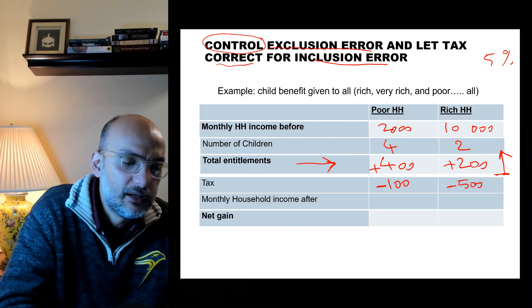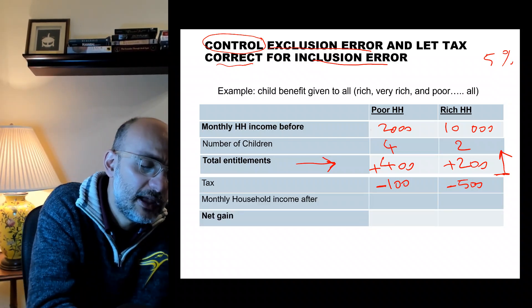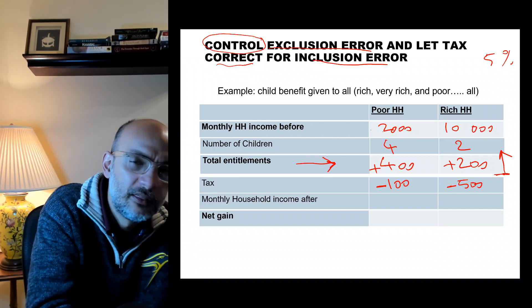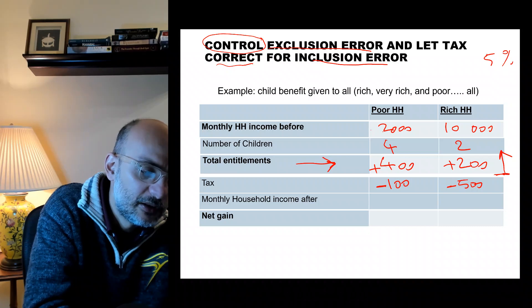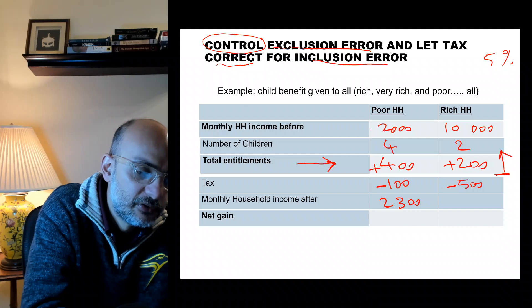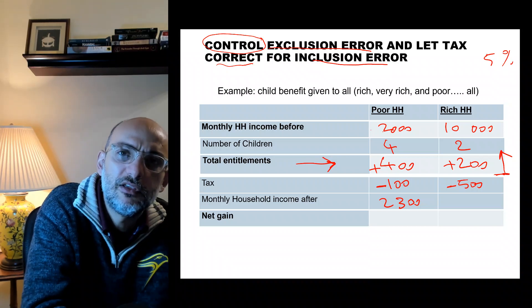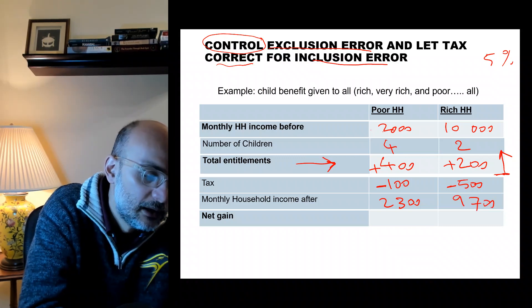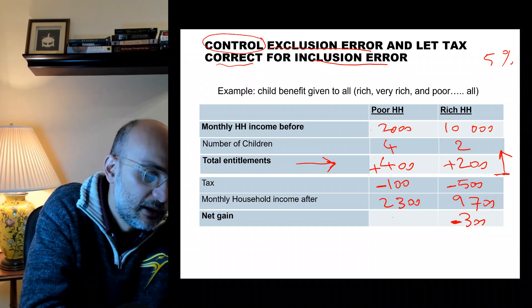Now let's look at monthly income. The poor household has an income of 2,000, receives 400 in benefits, so the end result is 2,400. The rich household has an income of 10,000, receives 200 from government, but pays 500 in tax — the end result is 9,700.